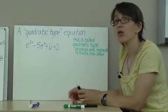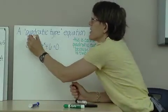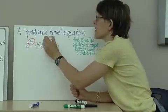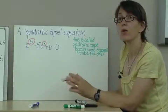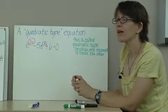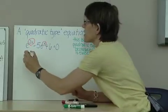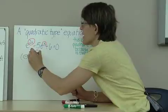This is called quadratic type because this exponent, 2 to the x power, is twice the size of this exponent. So it is quadratic type. We're going to solve this with factoring. Keep in mind that e to the 2x power is the same as e to the x power squared.